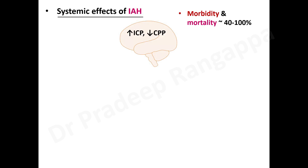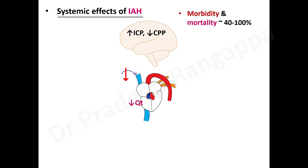Intracranial pressure increases — in polytrauma with TBI, over-resuscitation can worsen intracranial pressures and reduce cerebral perfusion pressure. At the cardiac level, venous return decreases, cardiac output falls, and systemic vascular resistance increases due to reduced preload. This is an important constituent to recognize in ICU patients with abdominal compartment syndrome.